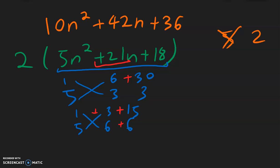Copy the signs over. Positive 3 times positive 6 is positive 18. So we know that these factors are correct. So we have n plus 3 and 5n plus 6. And then just remember to copy down the 2 from the front. And that is the answer. Thank you.